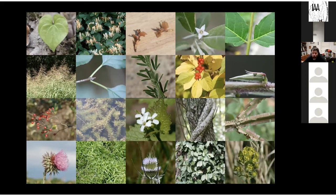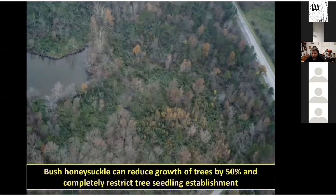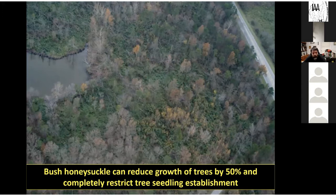We're finding that there are a lot of impacts to having these invasives on the landscape. One example — probably one of the worst invasives we have — is bush honeysuckle. There's interesting research showing that an infestation of bush honeysuckle, which is an understory shrub, is such a good competitor for water and nutrients that it can reduce the growth rate of overstory trees by 50% or more, and at the same time completely restrict tree seedling establishment.